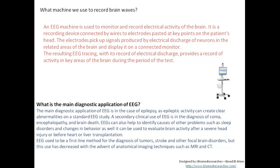Either liver transplantation or heart transplantation. EEGs used to be a first method of diagnosis of tumor, stroke, and other focal brain disorders, but this has decreased. Why? Because of the advent of anatomical imaging techniques such as MRI, CT scan, PET, and other types of MRI.